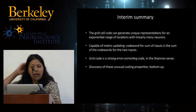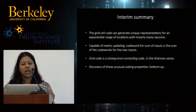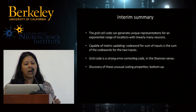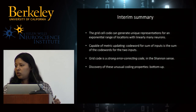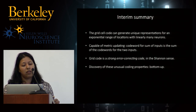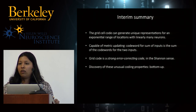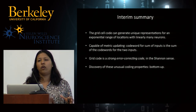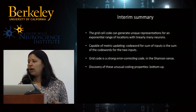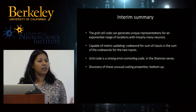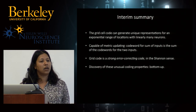Shannon proved before 1948 that it was believed impossible to have decreases in error while maintaining a finite information rate. Shannon's theorem showed it is possible to achieve asymptotically zero error at a finite information rate for discrete codes. The corresponding analog statement is that you should be able to achieve exponentially vanishing error at asymptotically finite information rate — and that is what the grid cell code seems to achieve. The interim summary: the grid cell code generates unique representations for exponentially large ranges of location using linearly many neurons, enables metric updating where the code word for a sum equals the sum of code words, and is a strong error correcting code.